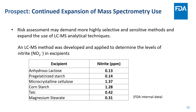What could lie ahead for nitrosamine analytical methods? With the increasing need of risk assessment and the interest in investigating causes and mitigating risk, there will be demand for highly selective and sensitive methods, which will continue to expand the use of mass spectrometry in pharmaceutical analysis, especially LC-MS. For example, an LC-MS method was recently developed in our lab to screen nitrite levels in different excipients and drug products.